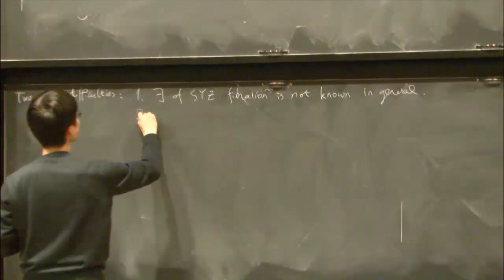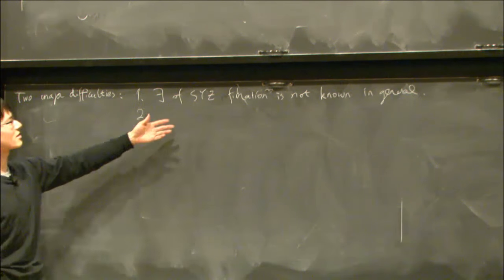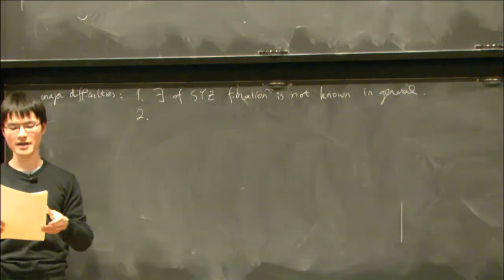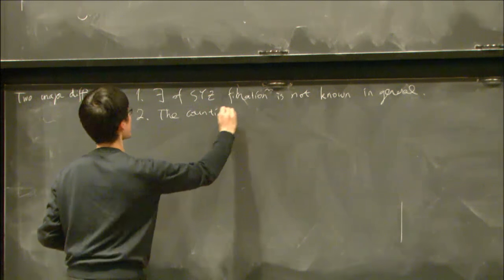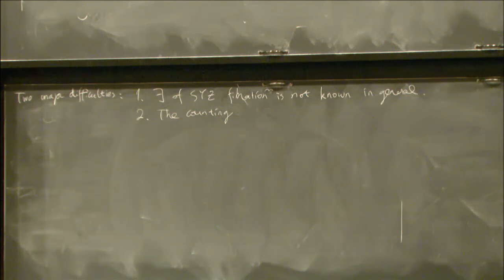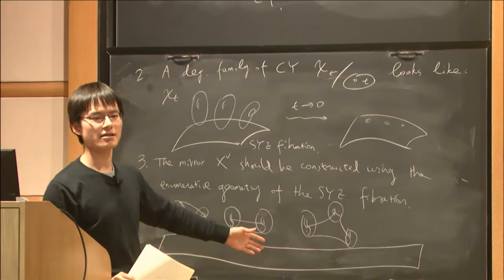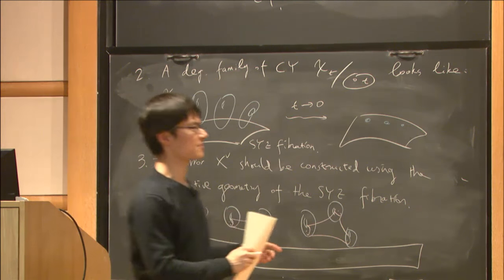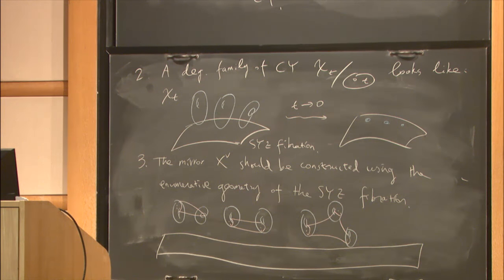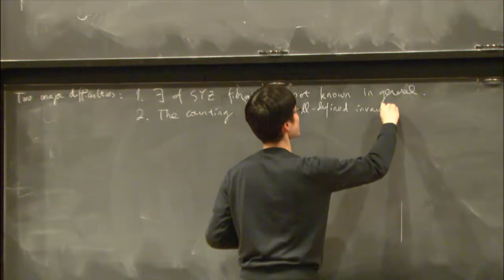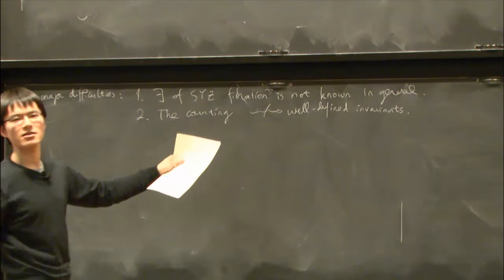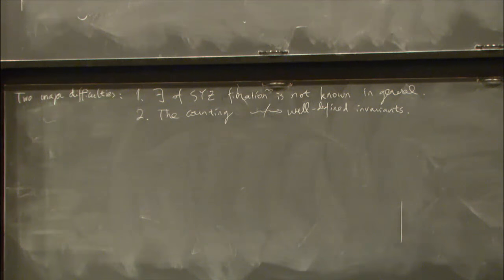Second, even if we assume we already have an SYZ fibration, there is another problem. When we do the counting, we don't get well-defined invariants because they depend on choices we make during the counting.